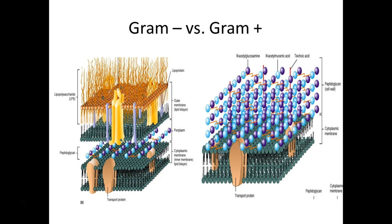If lysozyme chews up that peptidoglycan cell wall, what happens to the cell? It will lyse — it will burst and die. The function of the cell wall is to protect against osmotic pressure, preventing water from rushing in and bursting the cell. So whether it's penicillin interfering with cell wall synthesis or lysozyme degrading the cell wall, the result is the same: the cell lyses and dies.